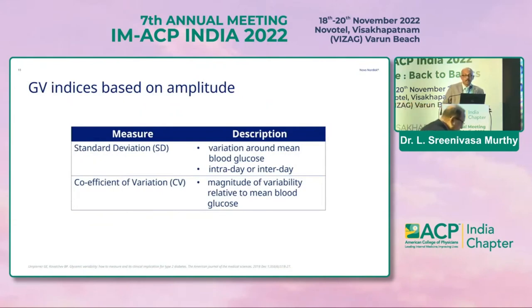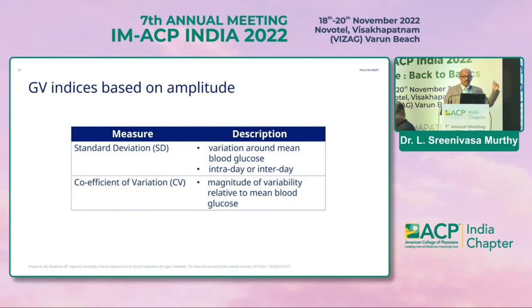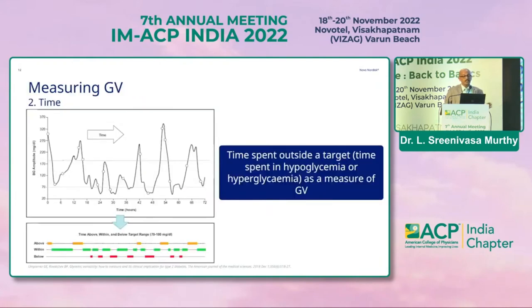While most physicians in clinical practice are familiar with the use of standard deviation, GV-related research utilizes the CV — that is, SD divided by the mean, which is the coefficient of variation. Practically, measuring GV involves the time spent outside the target — that is, the time spent in hypo or hyperglycemia as a measure of glycemic variability.